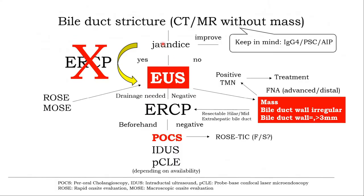This is a recommended pathway to get diagnosis for patients with suspected biliary stricture. If the patient's clinical picture improves, keep in mind benign causes: IgG4, PSC, or AIP. If EUS is available, recommend starting with EUS first to find mass, bile duct wall irregularity, or bile duct wall thickening more than 3 mm. In this group, suspect malignancy. If undiagnosed by EUS, move to ERCP combined with peroral cholangioscopy to see inside the bile duct, get visual impression, and obtain direct tissue biopsy. This is the approach to get diagnosis in indeterminate biliary stricture.